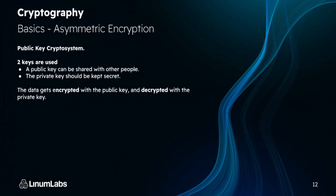Rather, we use asymmetric encryption — a public key cryptosystem. Here, two keys are used: a public key that can be shared with anyone, and a secret private key that no one should see except the intended recipient. The data gets encrypted with the public key and decrypted with the private key. In blockchains, we use asymmetric encryption with public and private keys a lot.